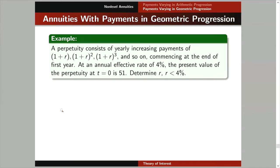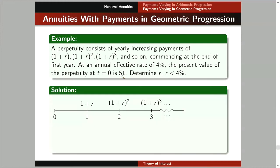Let's have some examples. We have a perpetuity with payments of (1 + r), (1 + r) squared, and so on, starting at the end of the first year. We cannot use the formula derived earlier. We use 4% as our annual effective rate of interest, and the present value is given as 51. To visualize, draw a time diagram. We need to find r, where r is less than i, and i equals 4%.